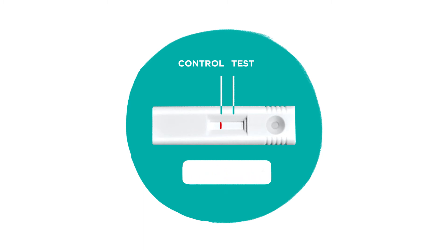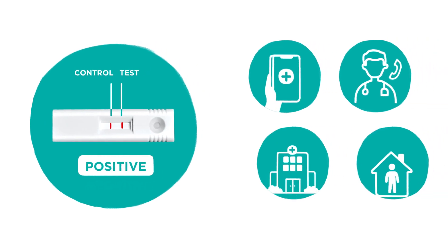The result is positive if both the control line and the test line are present. This means that the virus that causes COVID-19 was found in the sample. If the test result is positive,